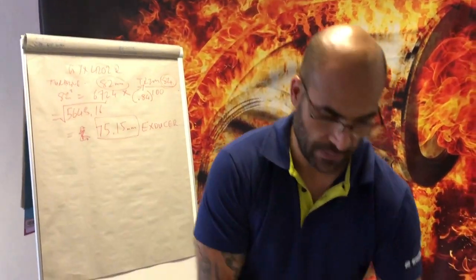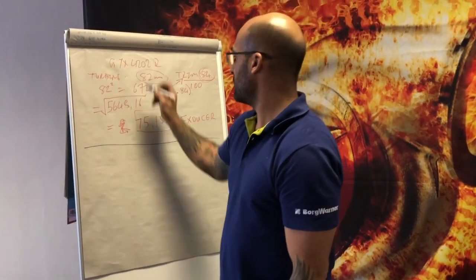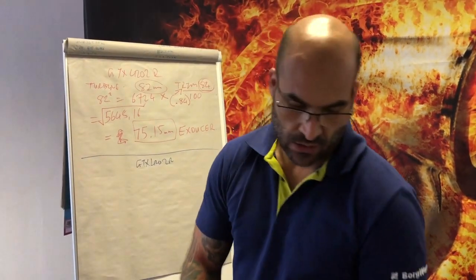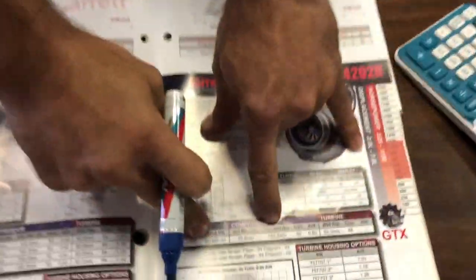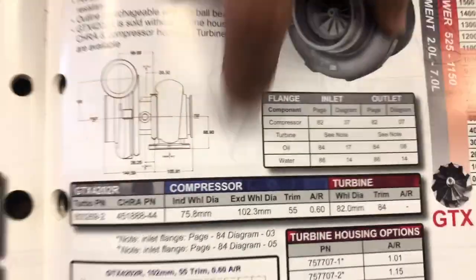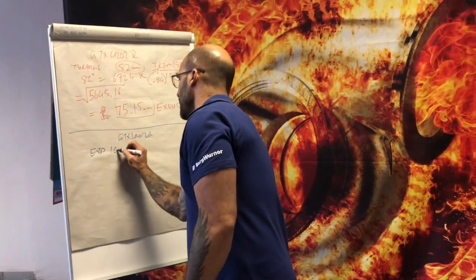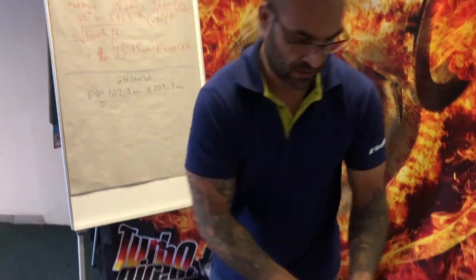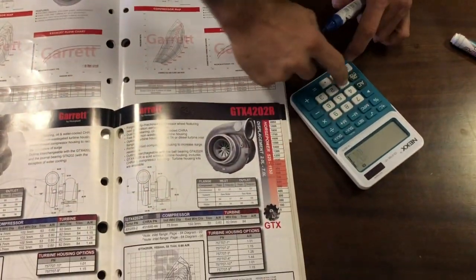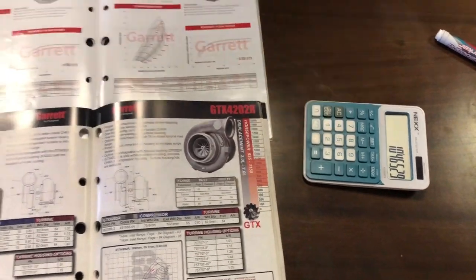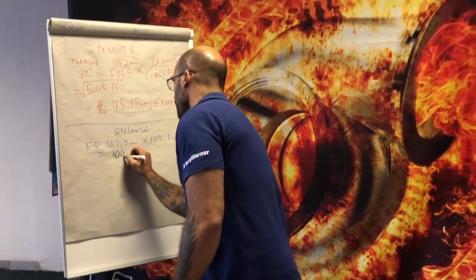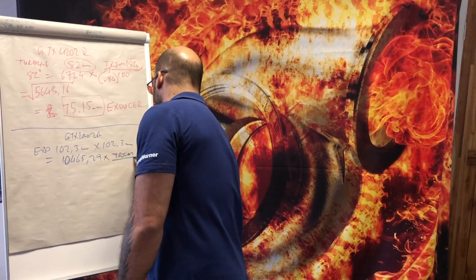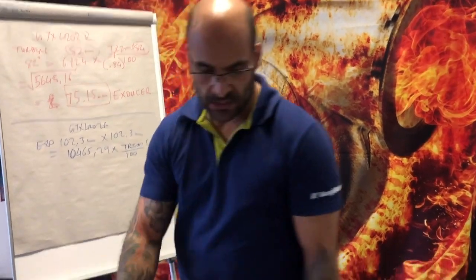It's exactly the same on the compressor side. GTX 4202R - on the compressor, the larger side of the wheel is the exducer at 102.3mm. So 102.3 times 102.3 equals 10,465.29. Then times by the trim divided by 100.